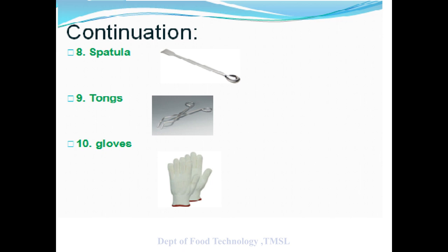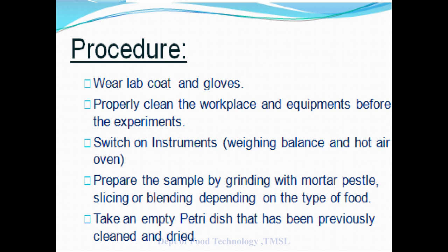Next is the procedure. First, clean the place where you will perform the experiment. Then start the hot air oven and balance, and set the hot air oven temperature at 105 degrees centigrade. Then the sample is to be prepared.